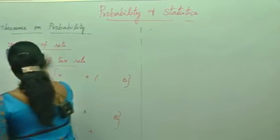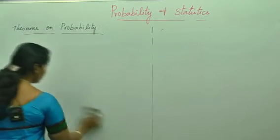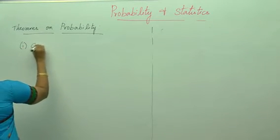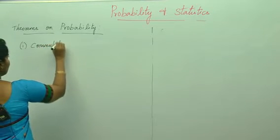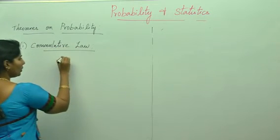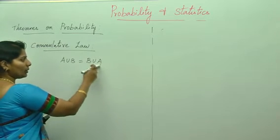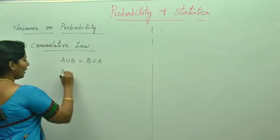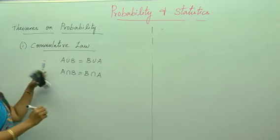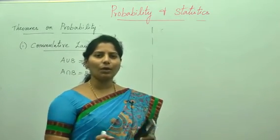Next, commutative law. We know that A union B is equals to B union A, and A intersection B is equals to B intersection A. These two are important. We will be using commutative law in conditional probability — A given B or B given A.